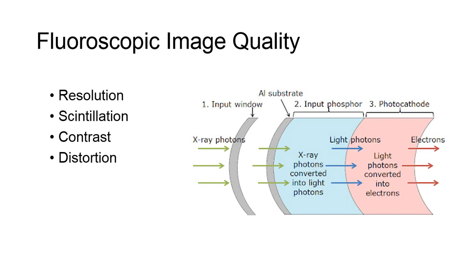As we know, anytime energy changes forms, for example, x-ray to visible light, visible light to electrons, etc., there is some level of signal loss, or at least a small percentage of information that is not efficiently transferred from one form to the next.